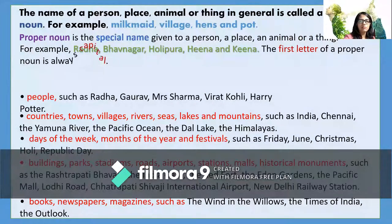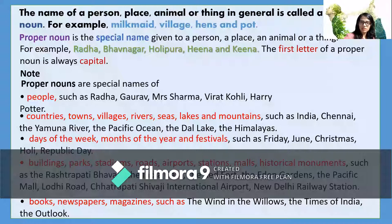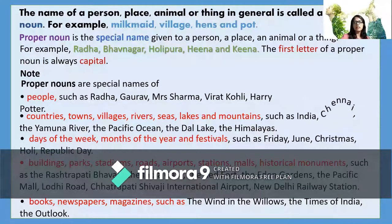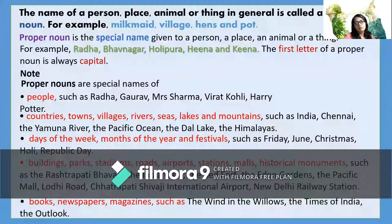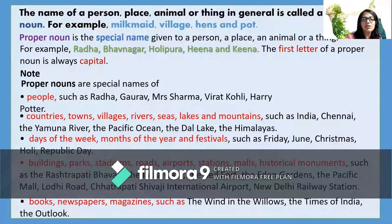Proper nouns are special nouns. Under this category we can have names of people, countries, towns, villages, rivers, seas, lakes, and mountains — the specific names of all these are proper nouns. Even days of the week like Monday, Tuesday, Wednesday, Thursday, months of the year like January, February, March, and festivals like Christmas, Holi, Republic Day — all of these come under the proper nouns category.